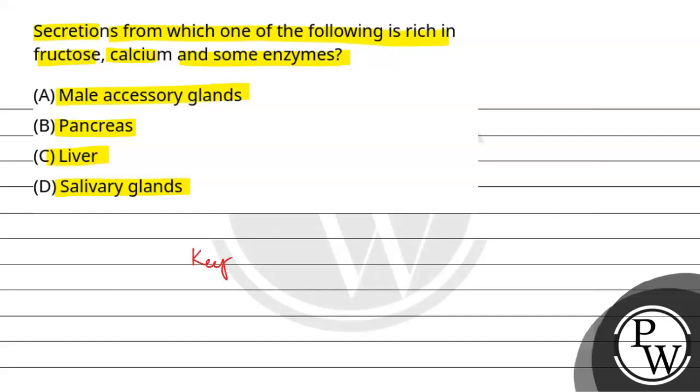So the key concept for this question is seminal plasma. Seminal plasma is secreted from three glands which are called the accessory glands.